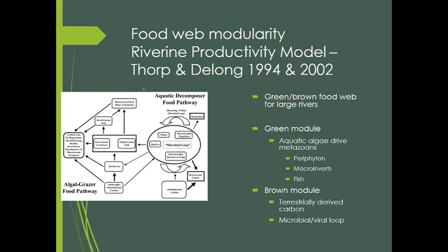The green module starts with algae, and most of it gets eaten by herbivores. Going back to that idea of 'why is the world green' — the Hairston, Bodkin, and Smith paper — we don't see a lot of algae standing biomass in aquatic systems. So most energy flows up to the herbivores, feeding into the zooplankton, carnivores, insectivorous fish, and piscivorous fish. We have periphyton, macroinverts, fish, and metazoans — the bigger stuff that we can see.